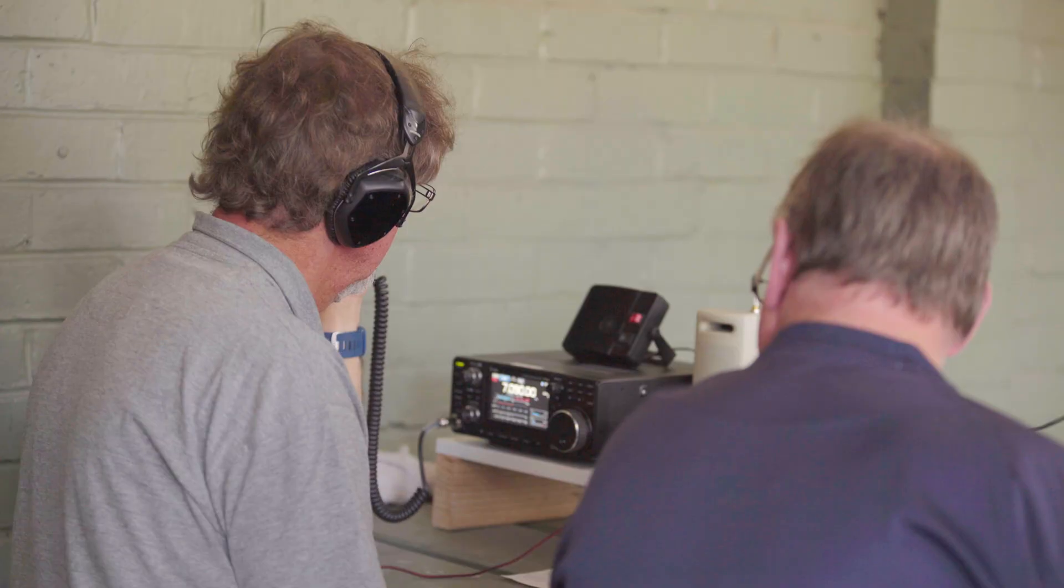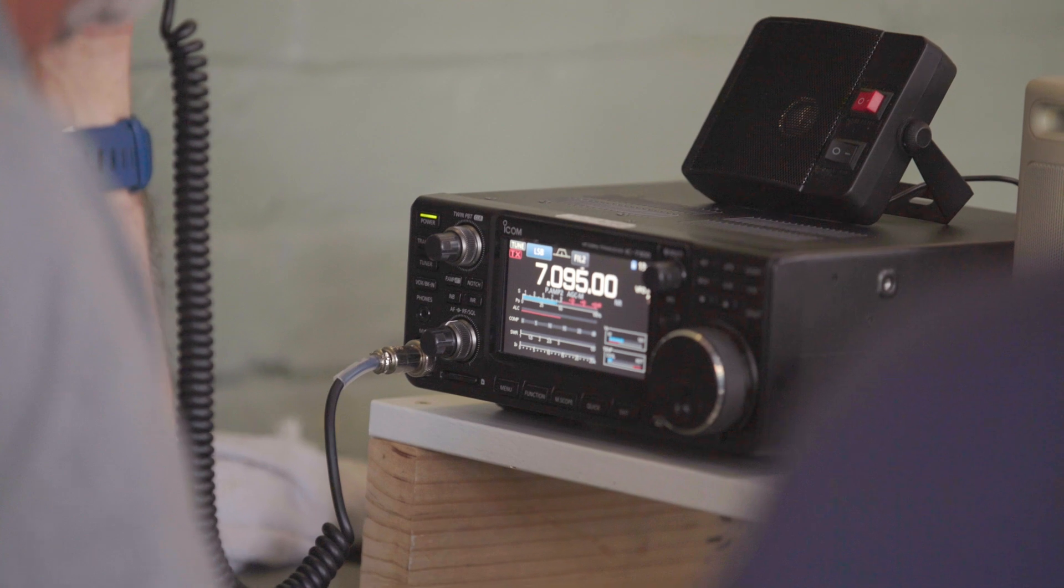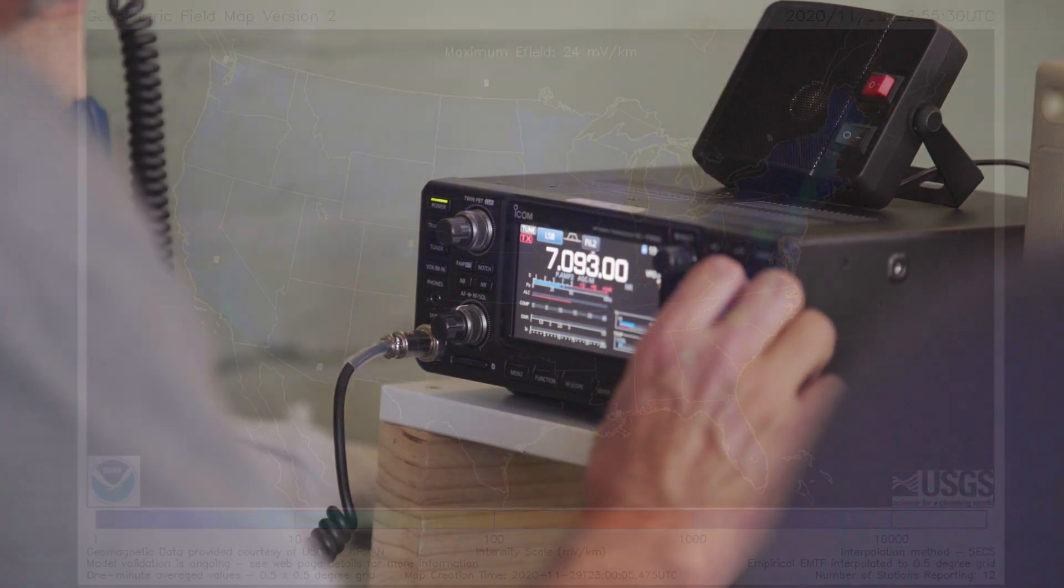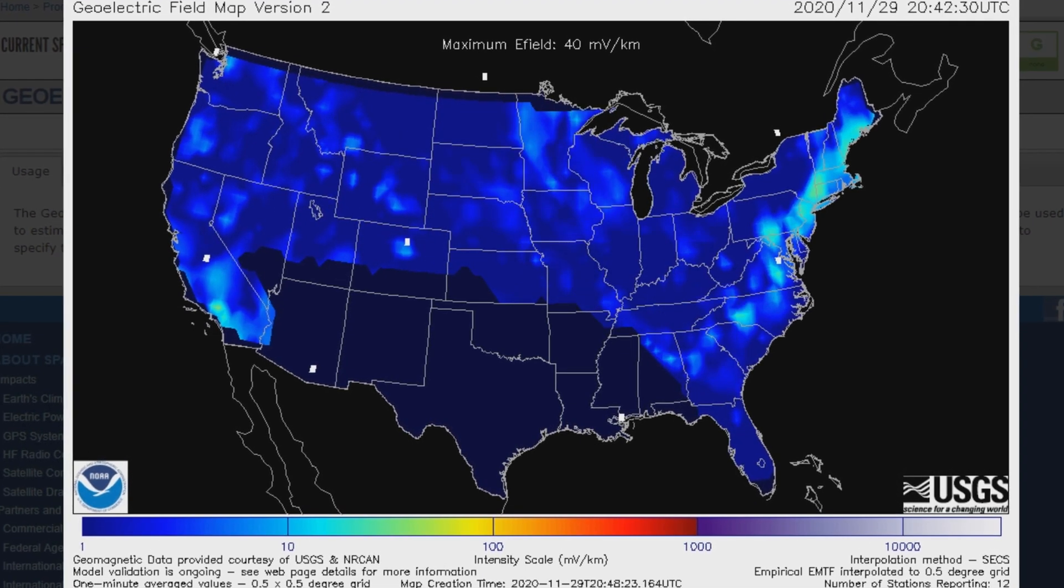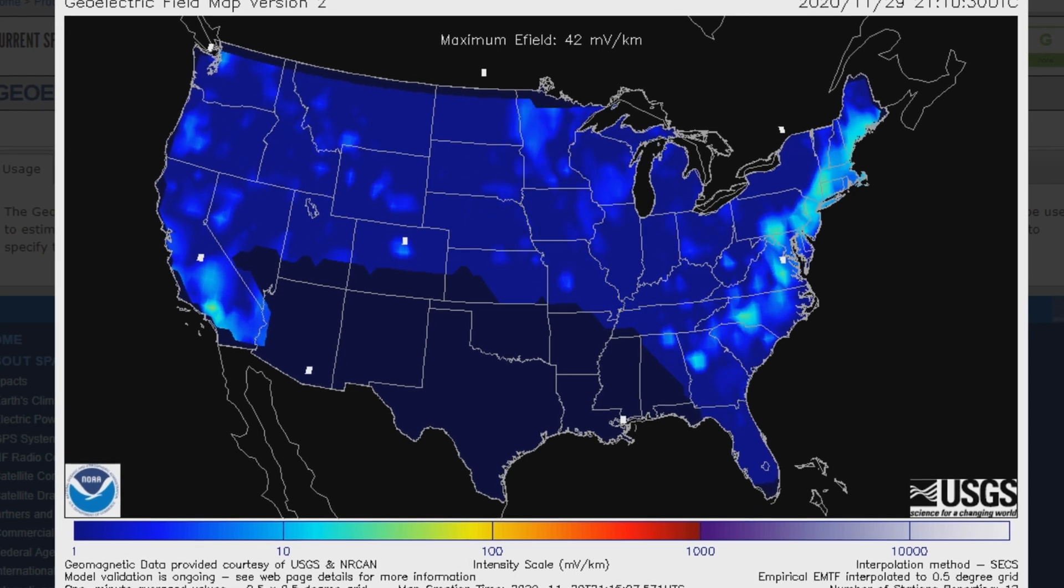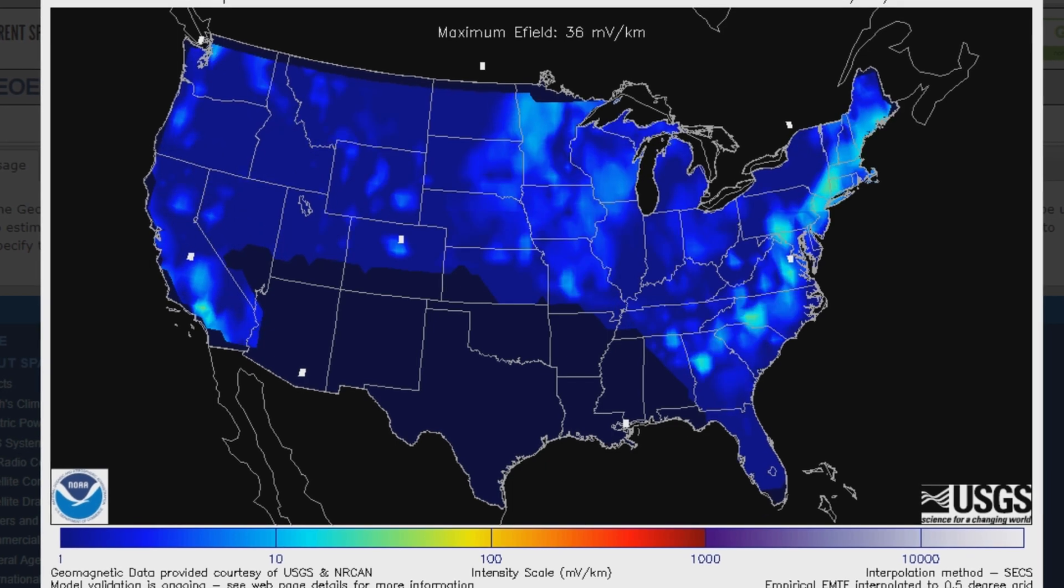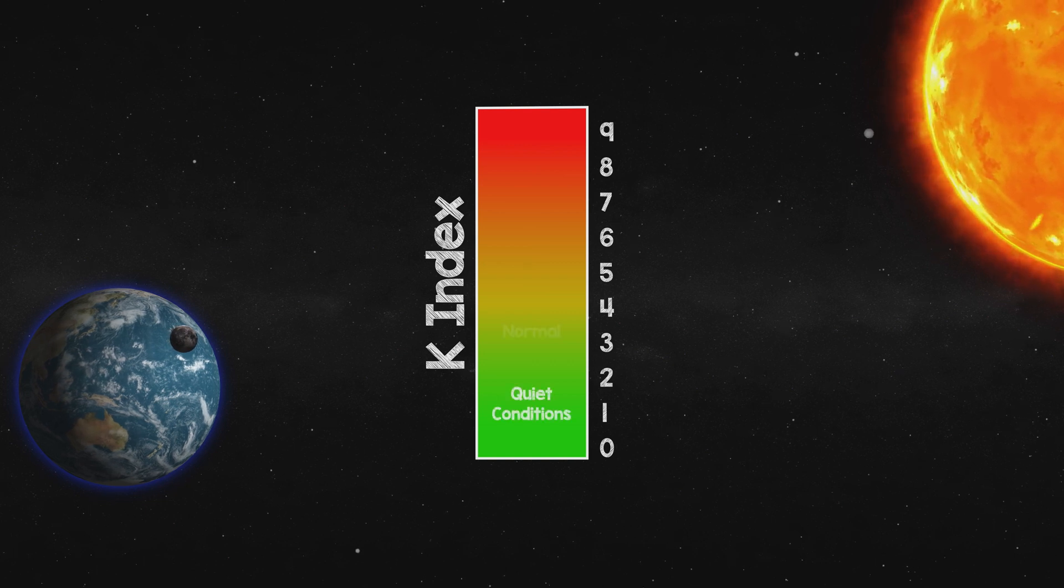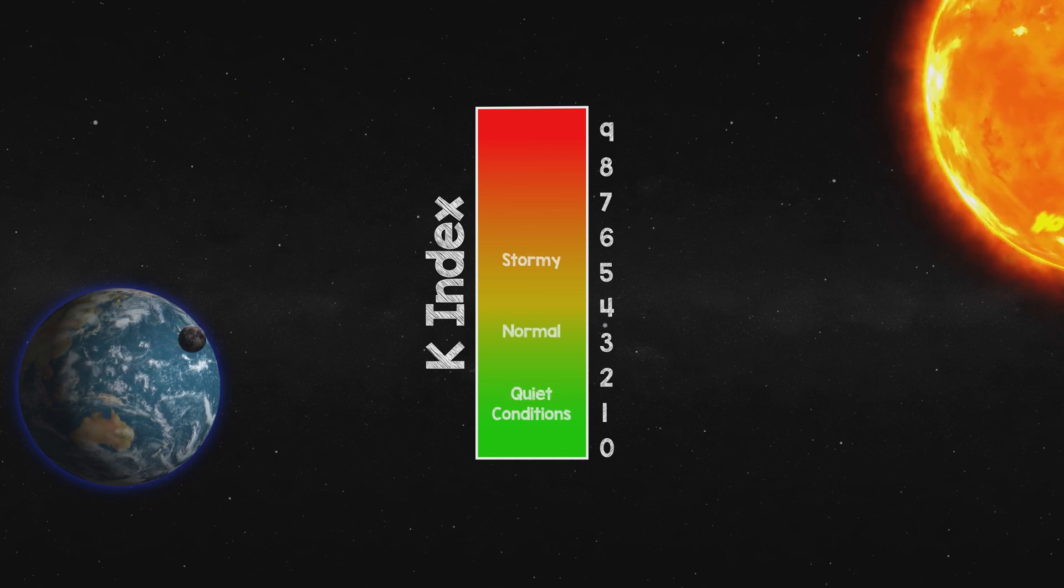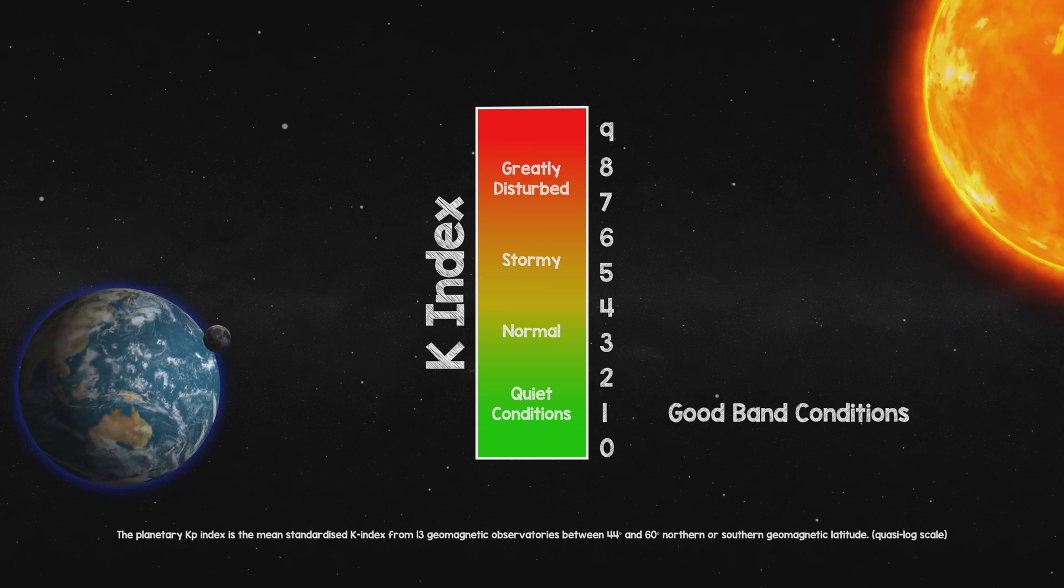There are two indices that are used to determine the level of geomagnetic activity. These indices give indications of the severity of the magnetic fluctuations and hence disturbances to the ionosphere. The first of the two indices used to measure geomagnetic activity is the K-index. The K-index quantifies disturbances in the horizontal component of the Earth's magnetic field with an integer in the range of zero to nine, with one being calm and five being more indicative of a geomagnetic storm.